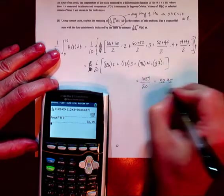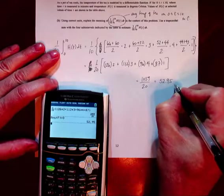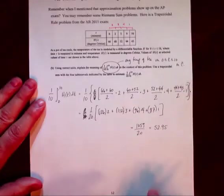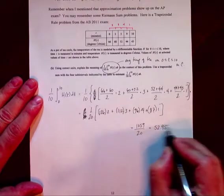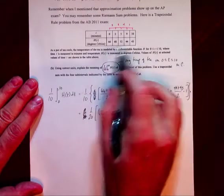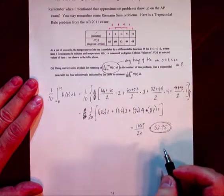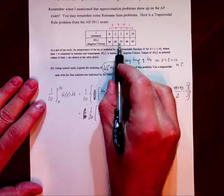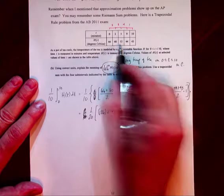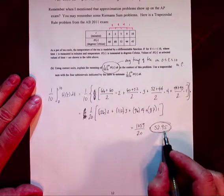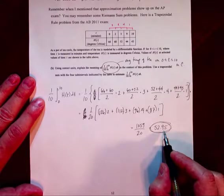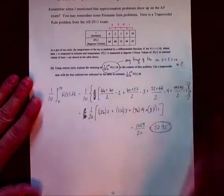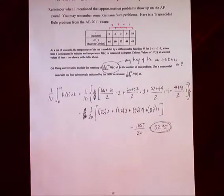That should make sense — 52.95 is certainly between 43 and 66, and is pretty close to the median temperature, which is the temperature halfway through the interval. The average temperature being close to the median temperature gives us comfort that we're in the ballpark.